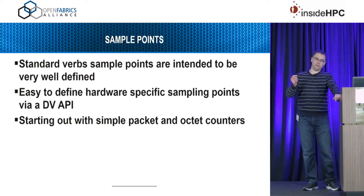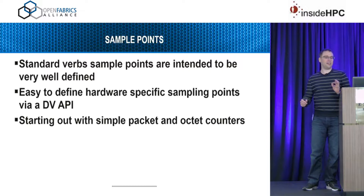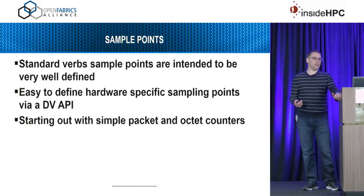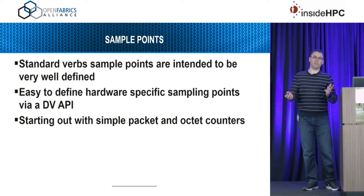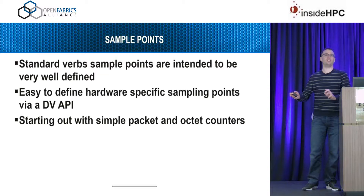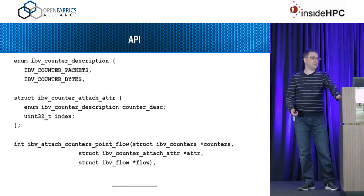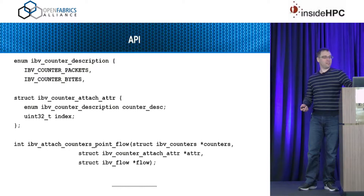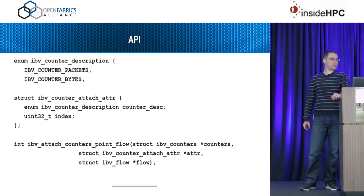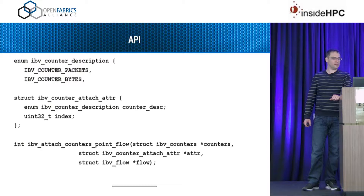In standard verbs we want the sample points to be extremely well-defined. If I define a sample point for bytes, we expect a precise definition of what bytes means — does it include packet headers or not, to that kind of detail. Since hardware differences will exist, the DV API can be used to specify hardware-specific sample points with your hardware's unique definition. The initial RFC is very simple — just packet counters and octet counters that are extremely well-defined. You can attach counters with a straightforward API: basically give it your flow group and the kind of counter you want to attach, and that's it.